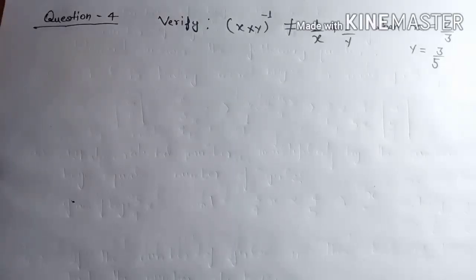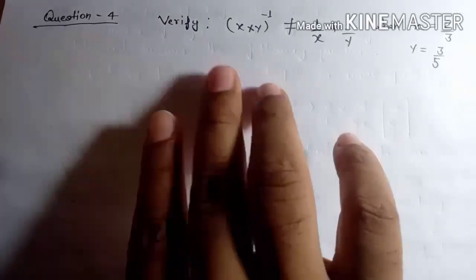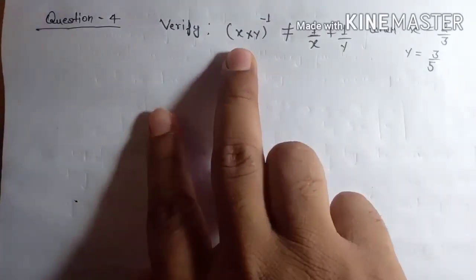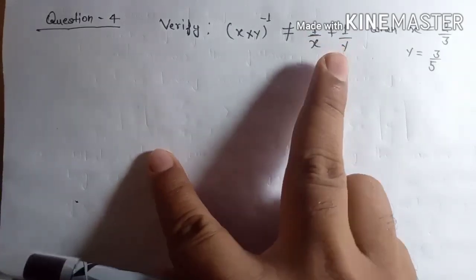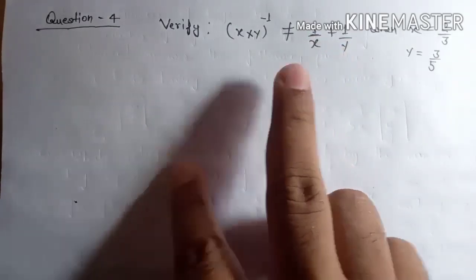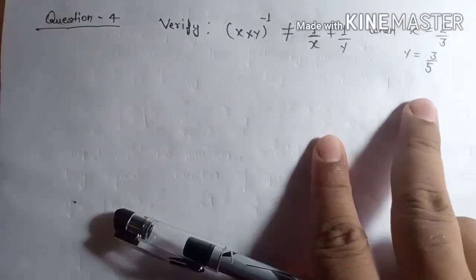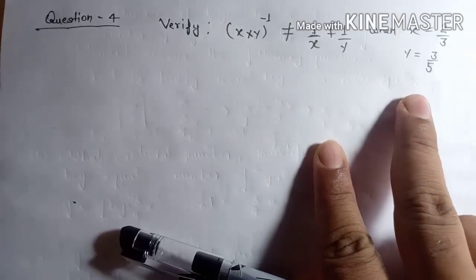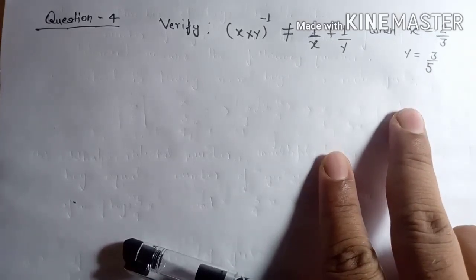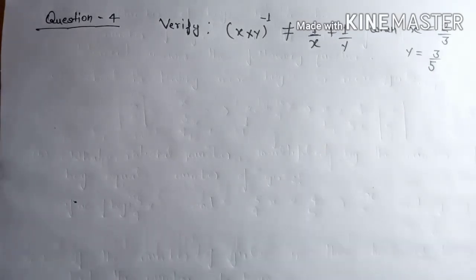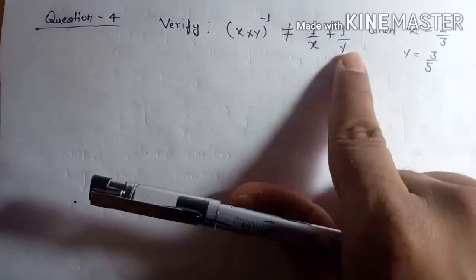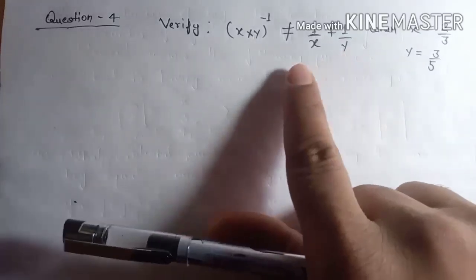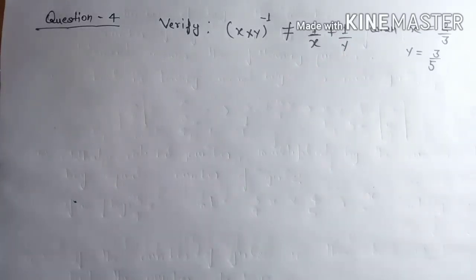We have question number four. We have to verify that x into y inverse, that is x into y to the power minus one, is not equal to 1 upon x plus 1 upon y, if x is 2 upon 3 and y is 3 upon 5. We will put the values of x and y in both sides and check what answer we get.